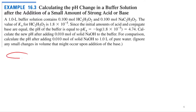Let's draw our buffer. We've got a beaker — one liter, so a pretty big beaker. In it we have acetic acid, HC₂H₃O₂, and acetate, C₂H₃O₂⁻. That's our buffer. Remember, the sodium is just a spectator ion — it doesn't really do anything. The acetate is the conjugate base. Then we're going to add some sodium hydroxide.